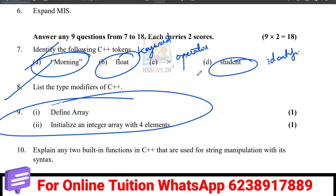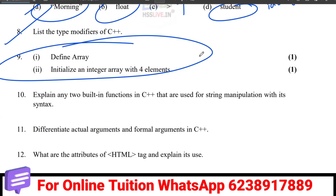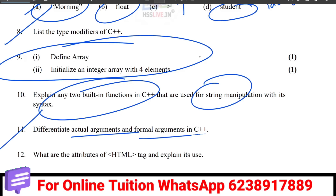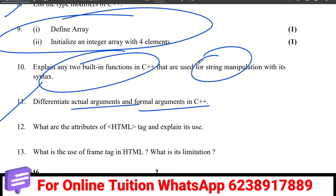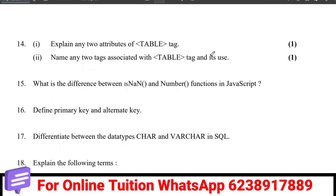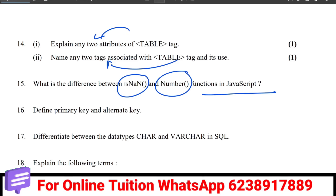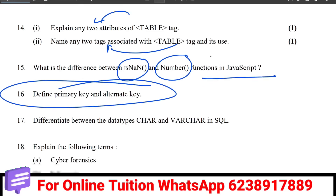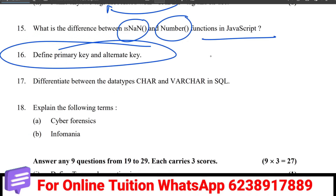How to define an array with 4 elements, and string manipulation functions. The difference between actual argument and formal argument. The use of HTML attributes, the frame tag, limitations of HTML. Two attributes of the table tag. Differences between numeric functions, between primary key and alternate key, and between char and varchar.